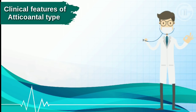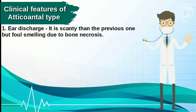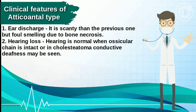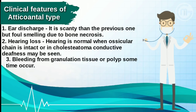Clinical features of atticoantral type: number one, ear discharge — it is scanty compared to the previous type but foul-smelling due to bone necrosis. Number two, hearing loss — hearing is normal when ossicular chains are intact, or conductive or mixed deafness may be seen when cholesteatoma is present. Number three, bleeding from granulation tissue or polyp sometimes occurs.